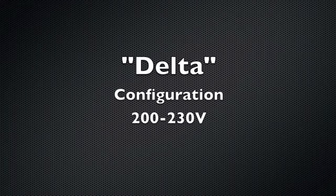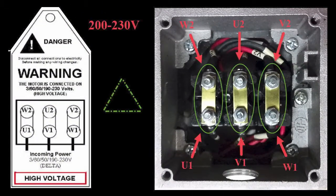For the low voltage or delta configuration, you will need to connect the terminal jumpers parallel to each other as shown here.